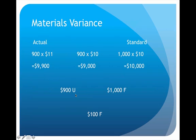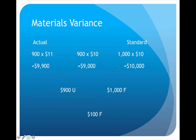We mark that with a U for unfavorable, because they spent nine hundred dollars more than the midpoint. Then we have the variance between the midpoint and the standard: nine thousand versus ten thousand is a difference of one thousand dollars. That's actually favorable, because this is less than the standard, so we put an F for favorable. The difference between the two main endpoints — ninety-nine hundred versus ten thousand — gives an overall total variance of one hundred dollars, which is also favorable because we spent less than we should have.